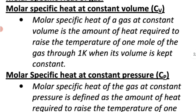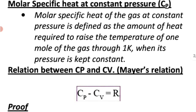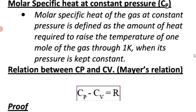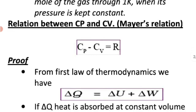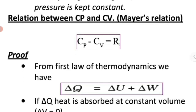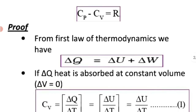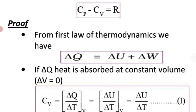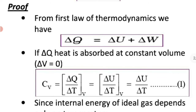Cp and Cv are totally different and they are related by a relation called Mayer's relation: Cp - Cv = R. Here we have a small proof for Mayer's relation. We start with the first law of thermodynamics: ΔQ = ΔU + ΔW. If ΔQ is the amount of heat absorbed at constant volume, we can write Cv = ΔQ / ΔT at constant volume.